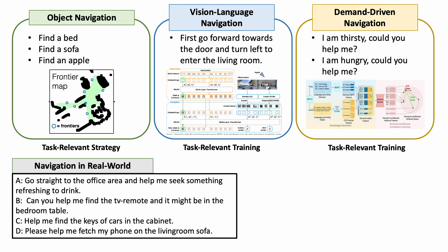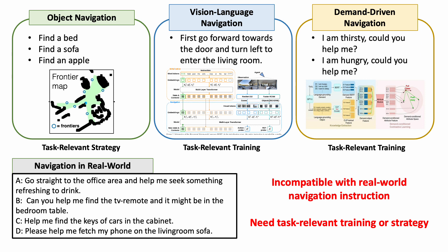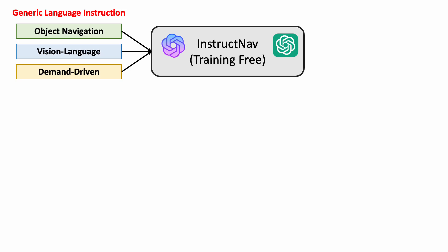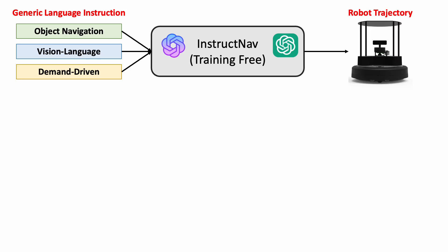Therefore, we think it is important to build a generic navigation system that can support multiple navigation tasks and any type of navigation instructions. Our proposed InstructNav is a training-free system based on large language models and large vision-language models. It can take in any type of language instructions and translate them into a robot-actionable trajectory.